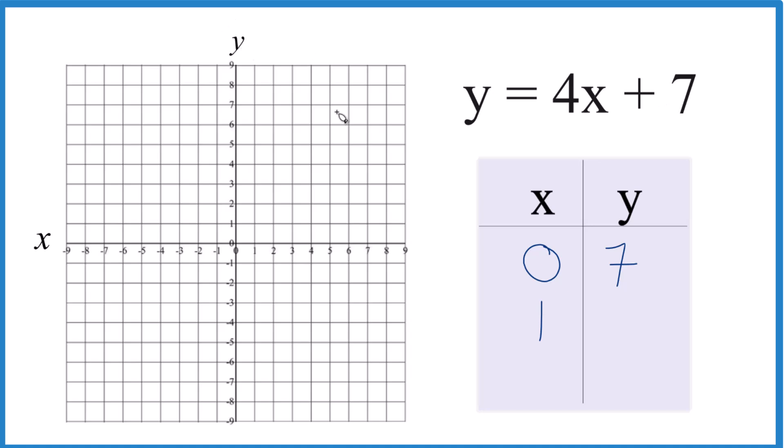I think what I want to do is make it negative 1. 4 times negative 1, that's negative 4. Negative 4 plus 7 gives me 3. That'll fit nicely.